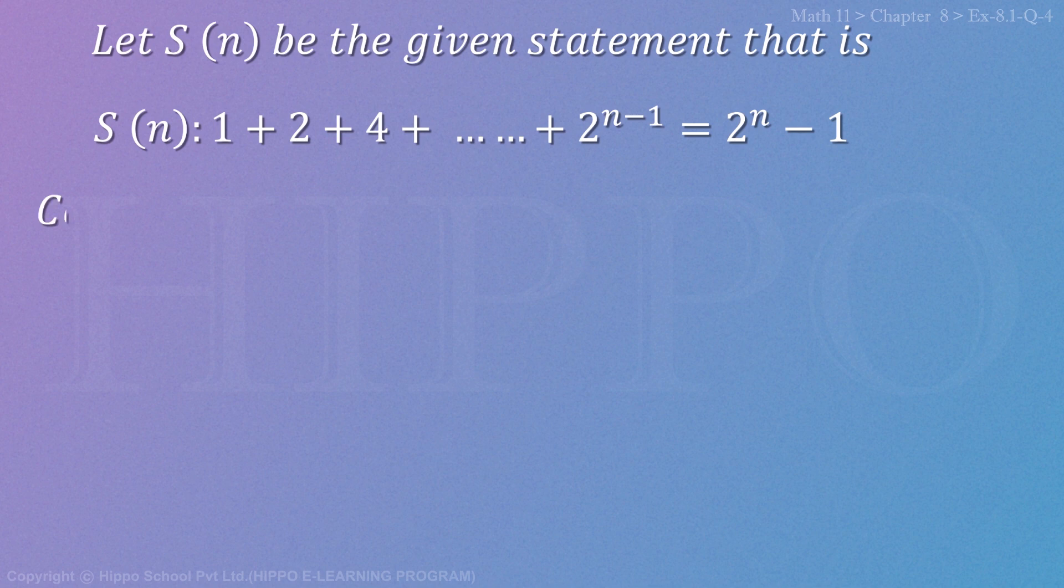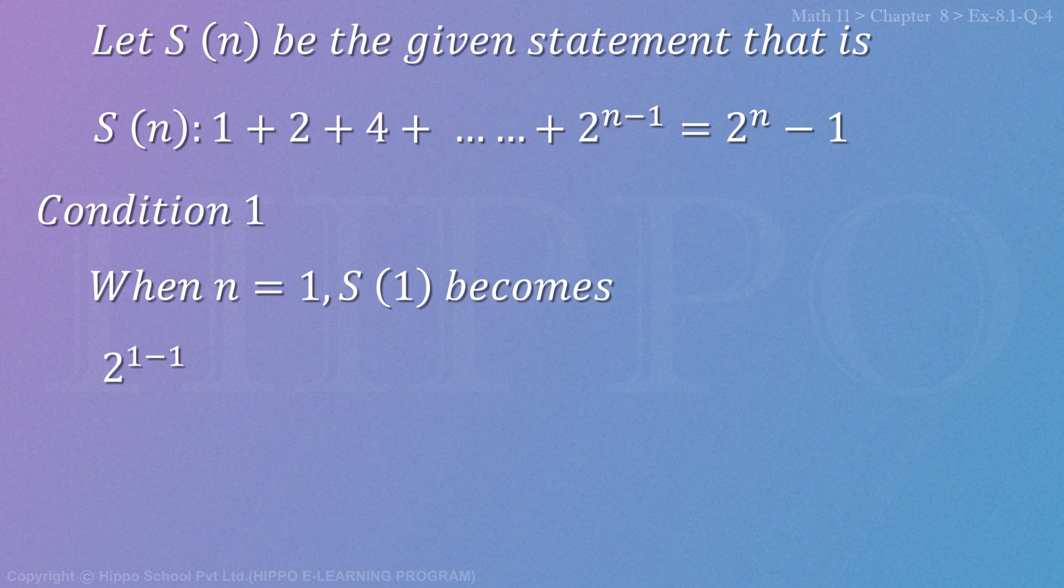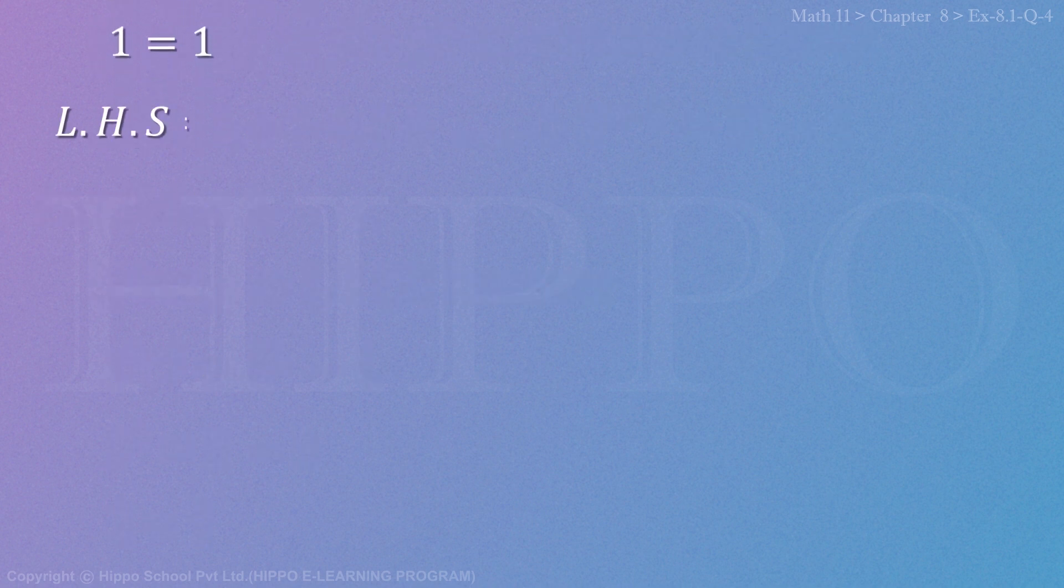Condition 1: When n = 1, S(n) becomes, on the left side, 2^(1-1), so we write 2^(1-1) = 2^1 - 1. 1 - 1 = 0, so 2^0 = 2^1 - 1. 2^0 equals 1, and 2 - 1 equals 1. Any number to the power 0 gives 1, so 1 = 1. Left hand side equals right hand side, therefore Condition 1 is satisfied.